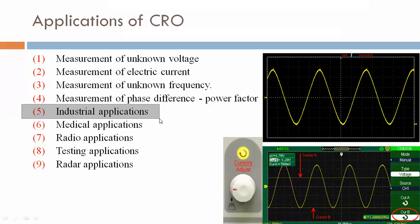So this is the industrial applications including radiation pattern measurements. Sixth, medical applications. CRO is used in medical applications like cardiogram.